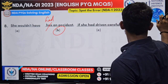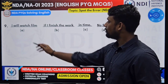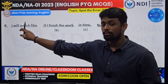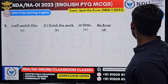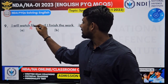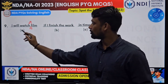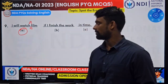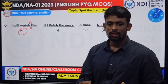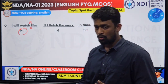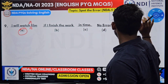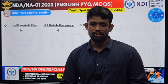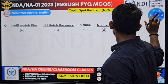Question nine: 'I will watch film if I finish the work in time.' It should be 'I will watch a film' — not just 'film'. You have to add an article before 'film'. So the error is in option A — you must include the article 'a'. Articles, preposition, subject-verb agreement, verbs, nouns — everything has to be covered. There are only a few rules to study and a few practice questions to master these concepts.